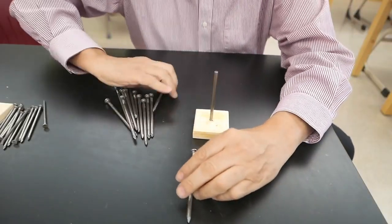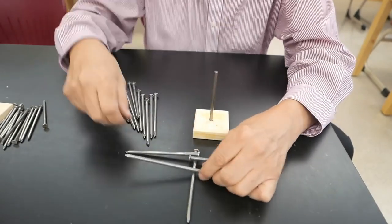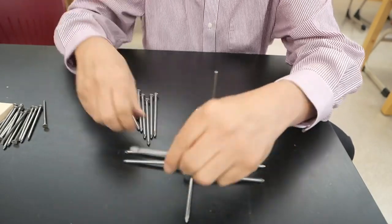The arrangement is going to start with a single nail laid on the table. I'm going to take the other nails and lay them on top of that on opposing sides.